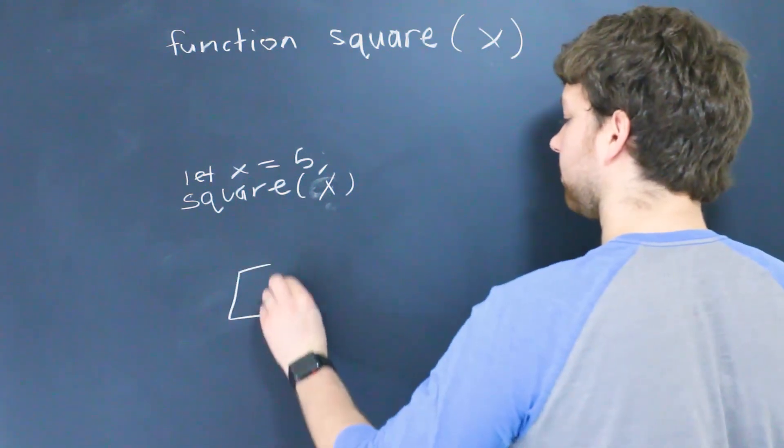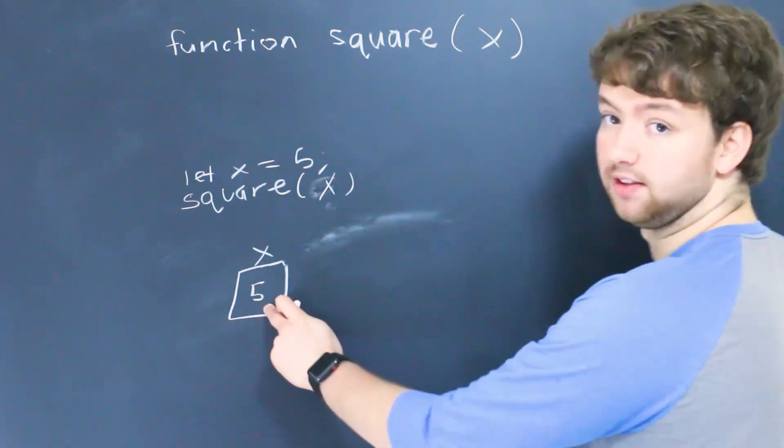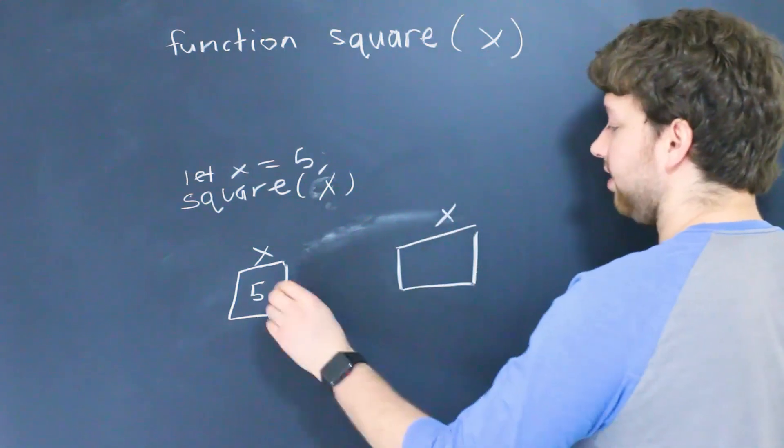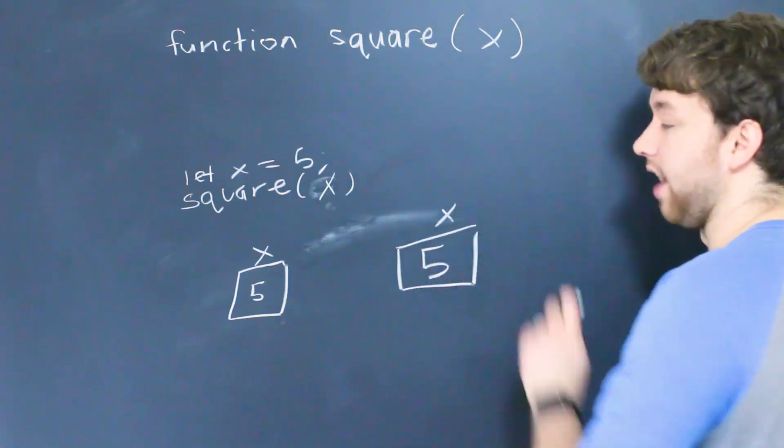Well what's going to happen is the value of X is going to get copied into this variable here. So it might look something like this. Here we have the X variable containing the value 5 and then we have another X variable and this 5 gets copied into that variable.